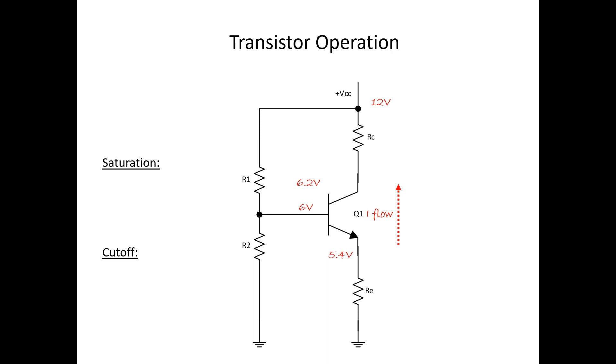This is known as saturation or maximum current flow. At this point the transistor acts like there's a short between the emitter and collector or there's no voltage drop. So if you measure across it with a voltmeter, you'd actually measure zero volts because it's not actually dropping any voltage.